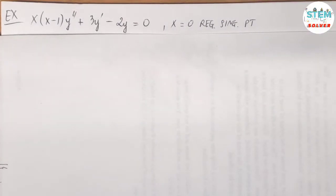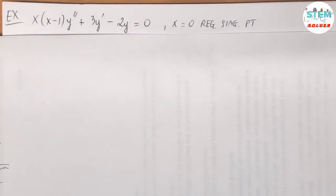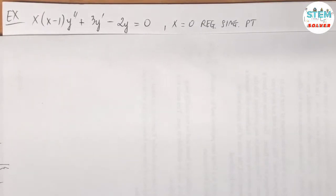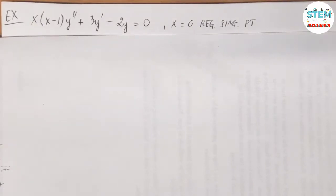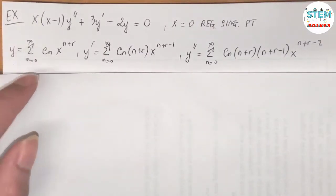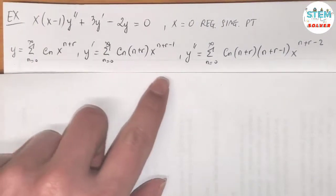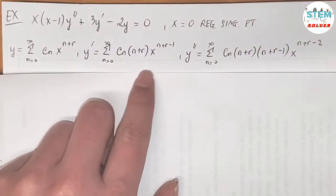We have a homogeneous differential equation: x times (x minus 1) times y double prime, plus 3y prime minus 2y is equal to 0. We are given that x equals 0 is a regular singular point, so our solution is given as y equals a power series from 0 to infinity of c_n times x to the n plus r. We take the first and second derivatives — we will need these.